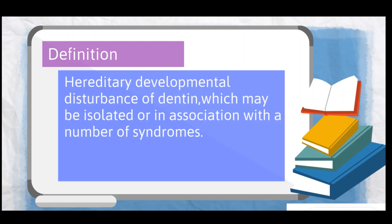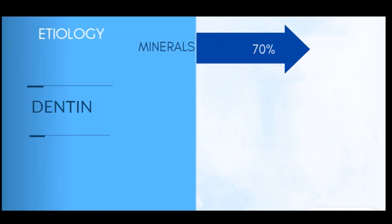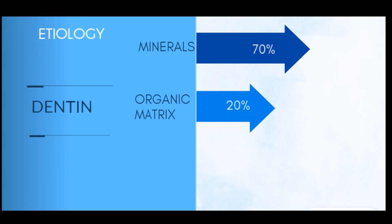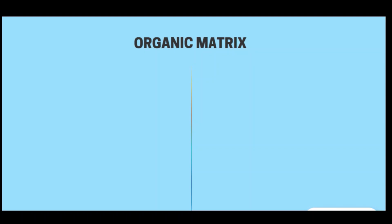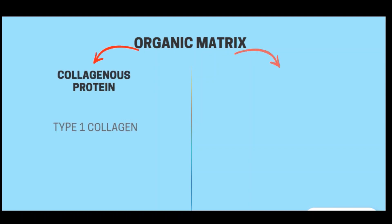Now we will look into a brief etiology. Dentine normally contains minerals 70%, organic matrix 20%, and water 10%. The organic matrix is made up of collagenous protein and non-collagenous protein.